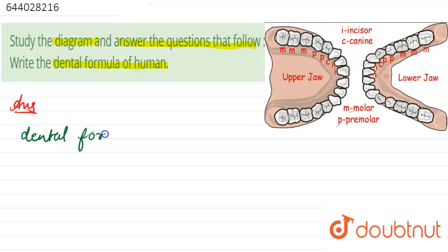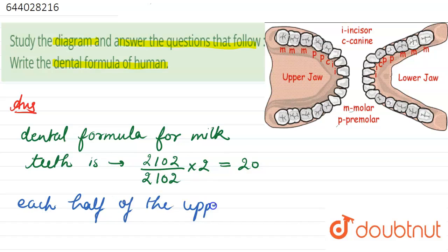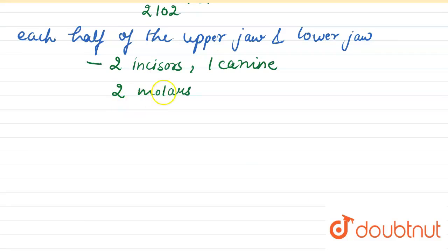The dental formula for milk teeth in humans is 2102 divided by 2102, multiplied by 2, which equals 20. Each half of the upper jaw and lower jaw has two incisors, one canine, and two molars. Premolars are absent in milk teeth, hence the zero.